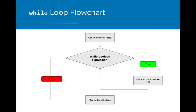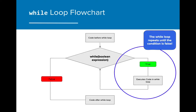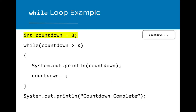This is a look at the while loop flowchart. As indicated by the chart, the while loop will repeat itself until the condition in the while loop is false. Only once the condition is false will any code that follows be executed. Here we have created a simple countdown program using a while loop. We've created a variable called countdown and set the boolean expression to be countdown greater than zero, indicating that if countdown is greater than zero, the while loop will execute.